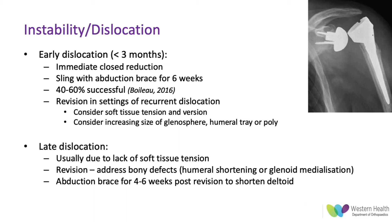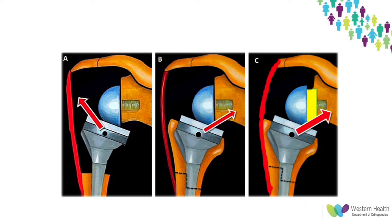Late dislocation is often also due to lack of soft tissue tension, and revision needs to address bony defects such as humeral shortening or glenoid medialization. It's suggested that all patients should have an abduction brace after revision to lengthen the deltoid and increase its length-tension relationship to improve stability. Replacing proximal humeral bone loss or lateralizing the glenoid via bone grafting can increase the deltoid wrapping angle and improve soft tissue tension.